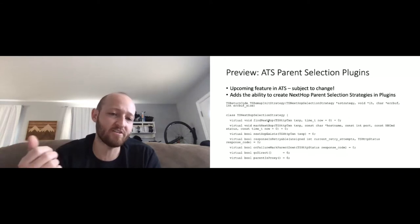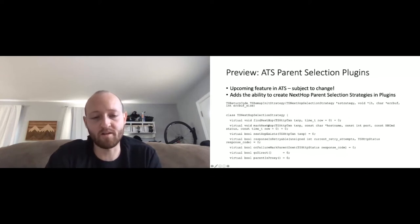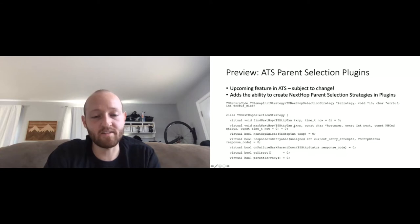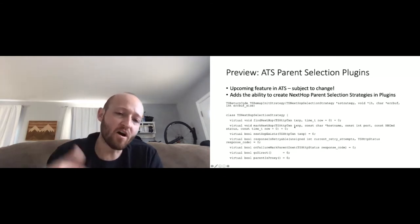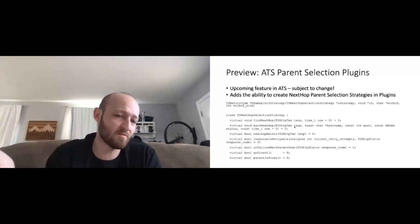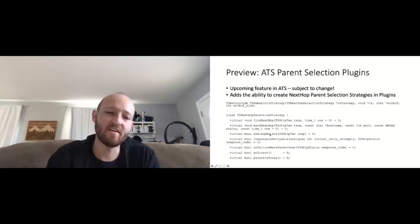The interface has functions needed for parent selection — these are what are currently in core. We could add new strategies in core today, but then you'd need a new ATS version. That's why we want plugins. The functions are: find_next_hop — core will call this on the strategy you register for remaps whenever they need a parent. Then mark_next_hop — when there's a failure, core will call mark_next_hop on the strategy you registered. It takes a TS_TXN. This just exposes to the plugin what's essentially being called in core today.